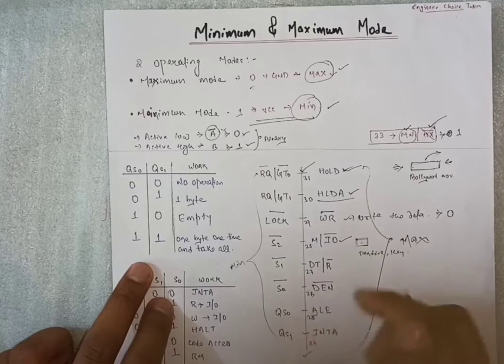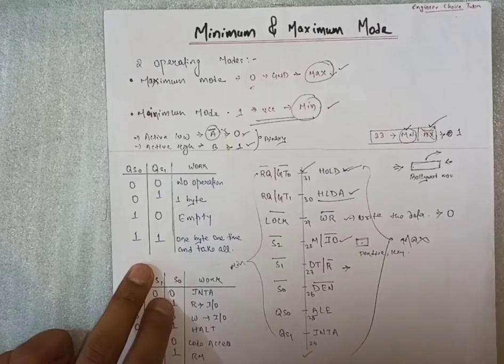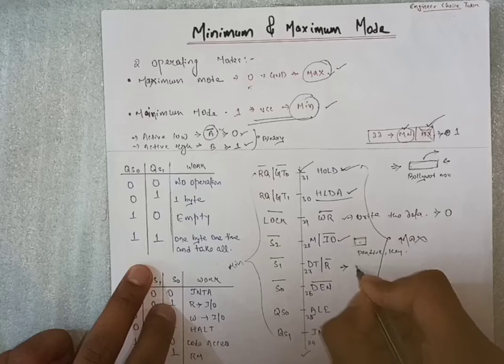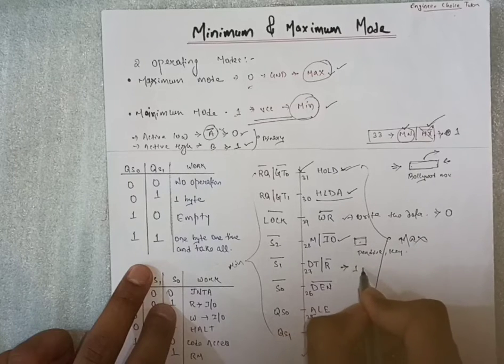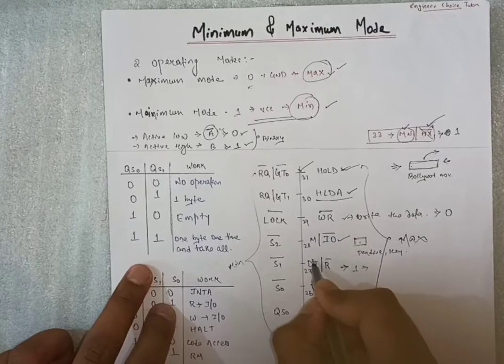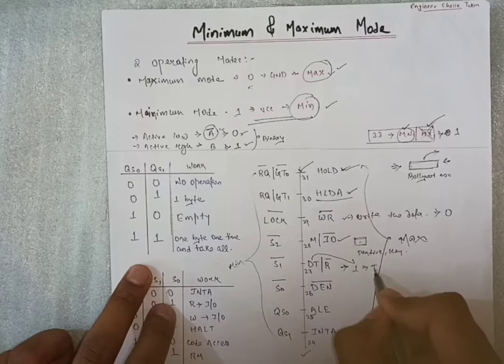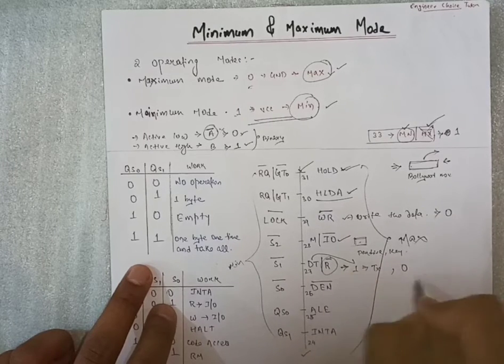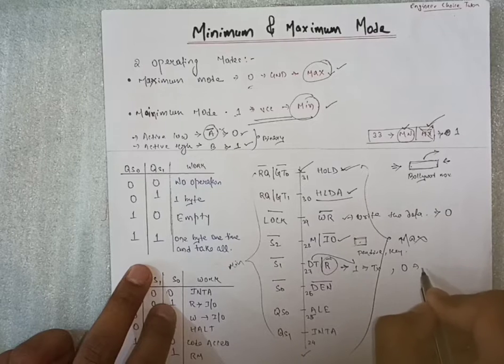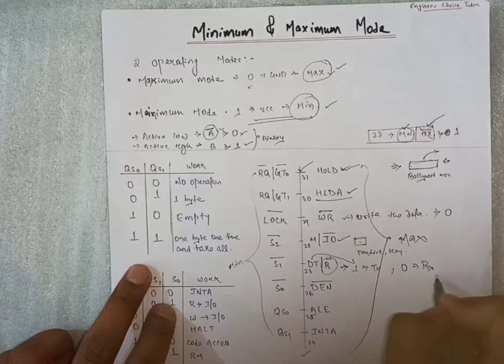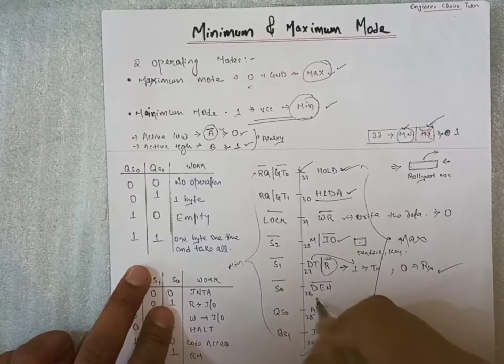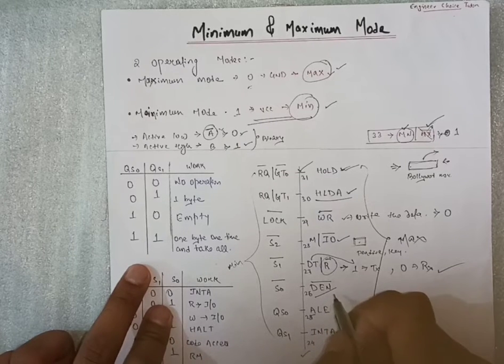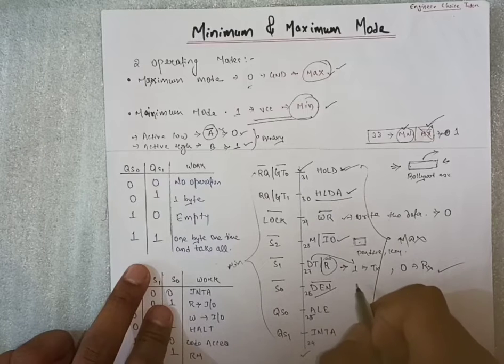After that, data transmit and receive. When this pin value will be one means actively high, then data transmit means we know that transmitting is going on. When value will be zero, receiving is going on. After that, data enabled. It will tell which data is enabled right now.